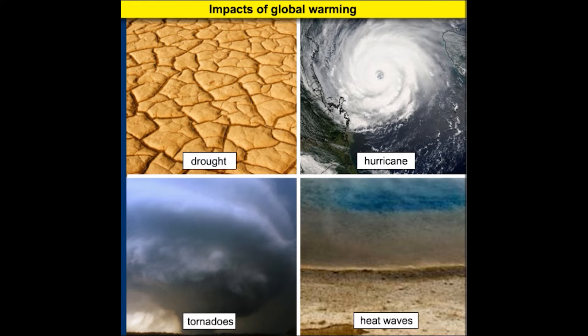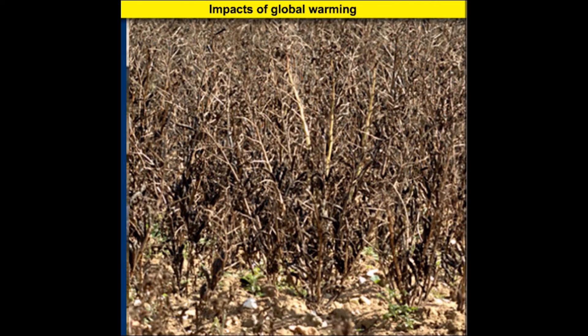Apart from the natural disasters, other consequences of global warming include poor crop production and famine.